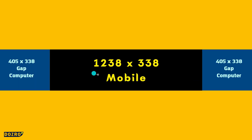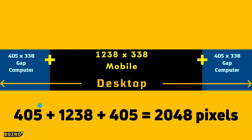In other words, as the safe area for mobile screen is 1238 by 338 pixels, you add an additional area of 405 by 338 pixels on both its sides to make the safe zone for display on desktop screens. When you add up all widths, the total width becomes 2048 pixels.